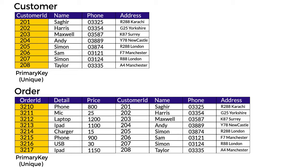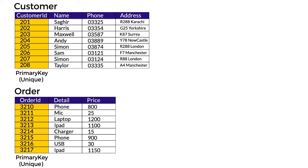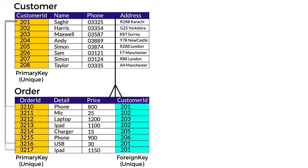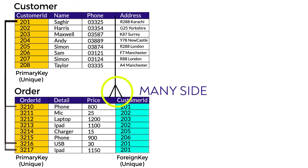In a one-to-many relationship, we make absolutely no change to the one side, which is the customer table. Instead, we add a column to the many side, which is the order table, by taking the primary key of the customer table and adding it to the order table where it acts as a foreign key. To remind you: primary key values cannot be repeated, but foreign key values can be repeated — that's how we create the link in a one-to-many relationship.